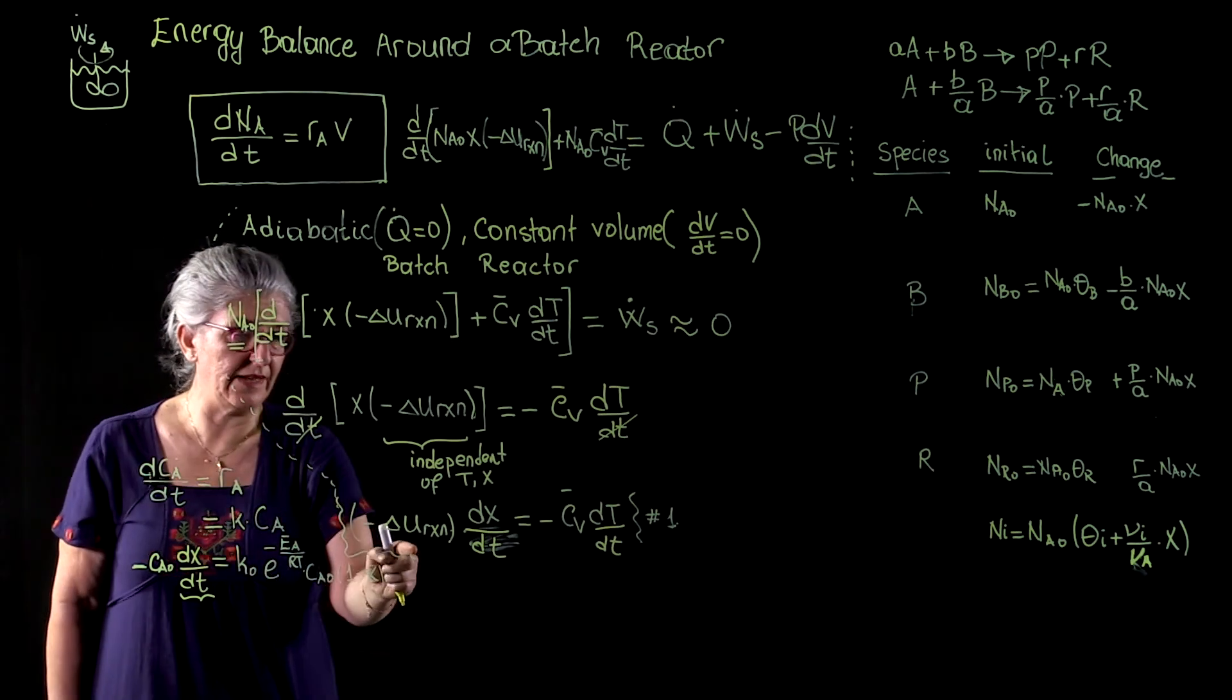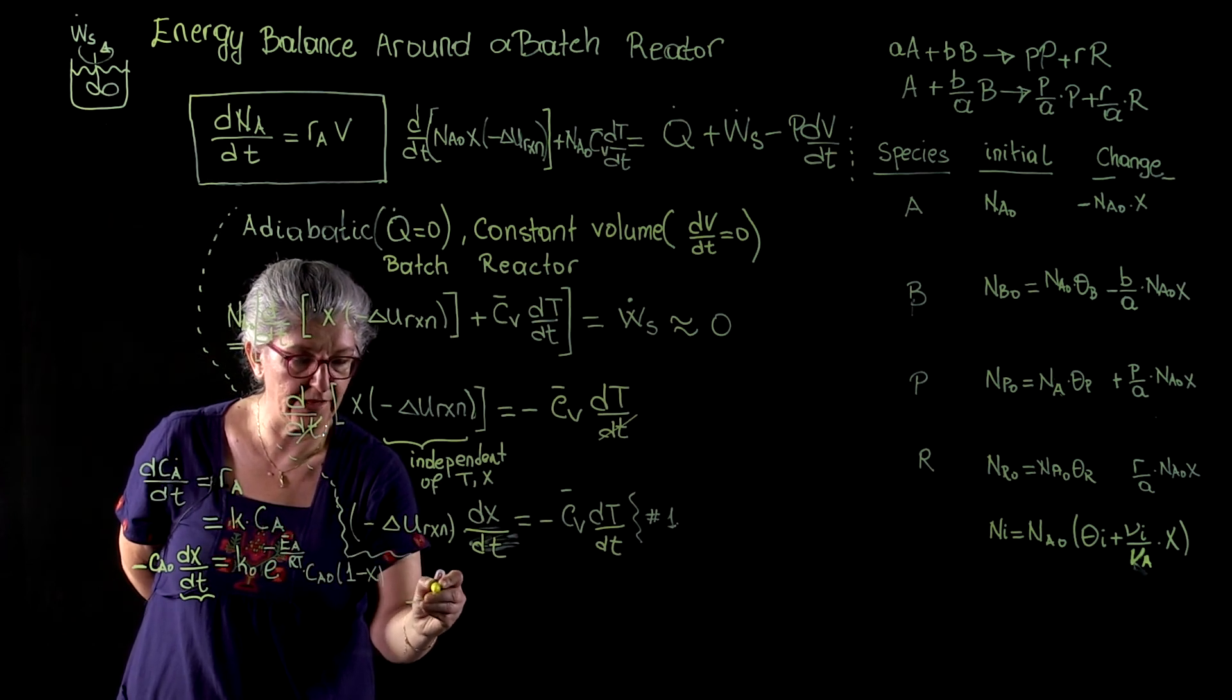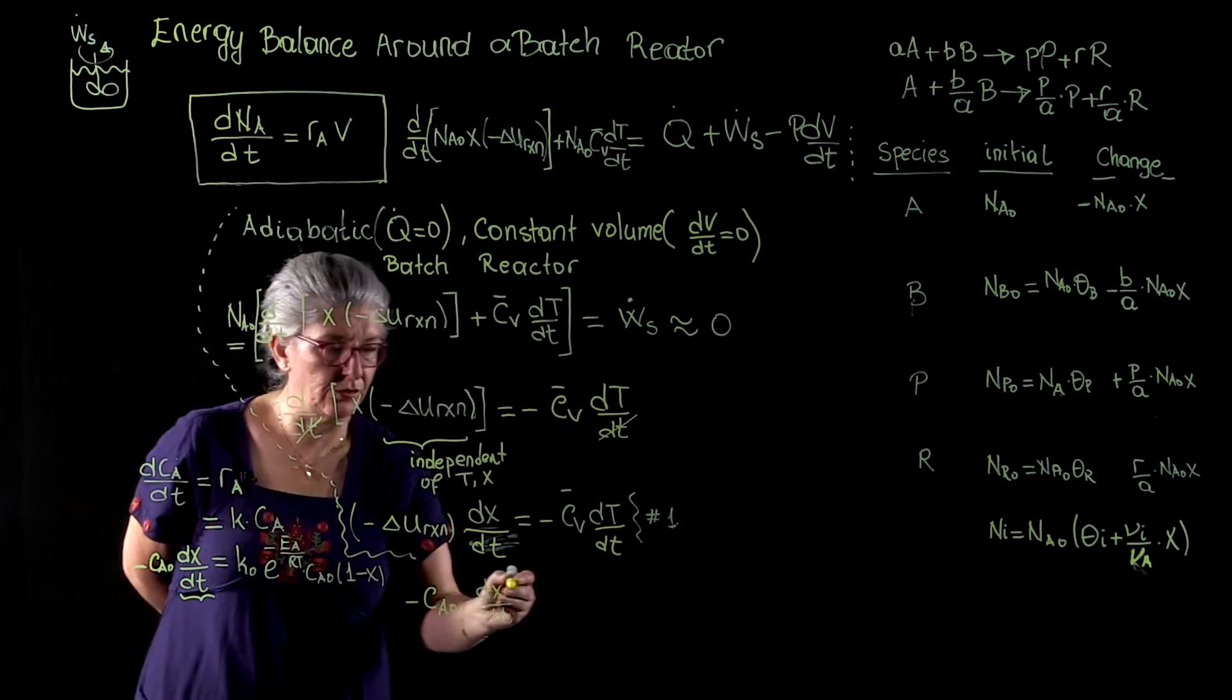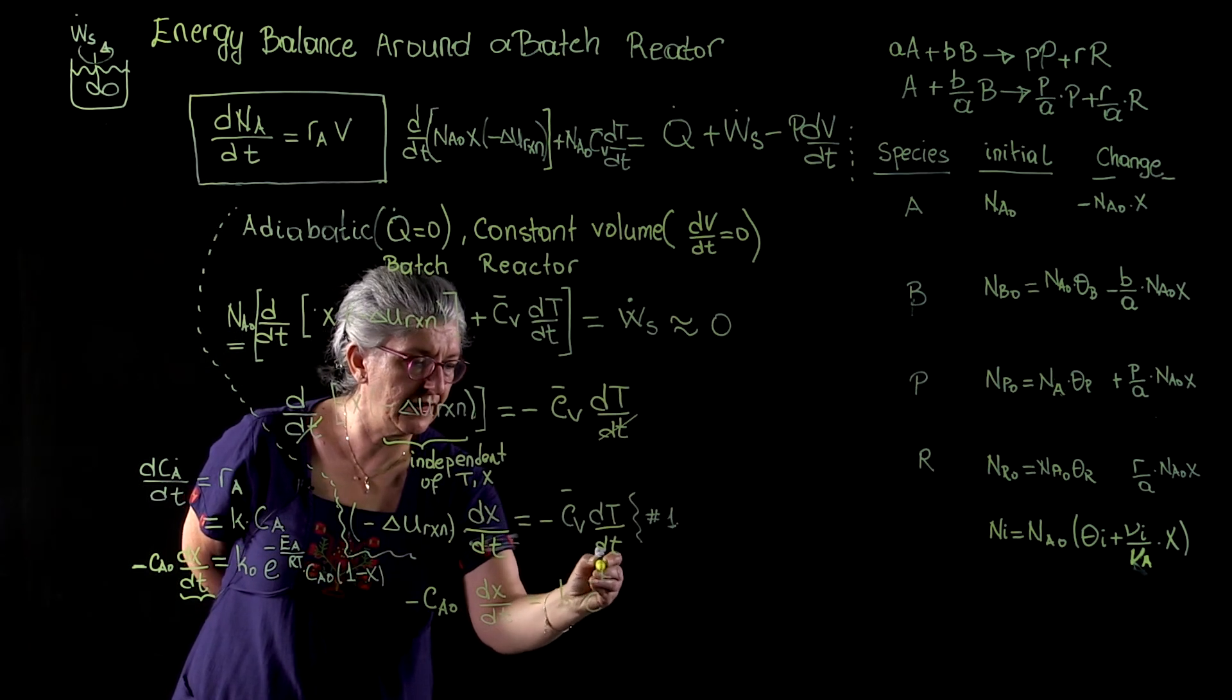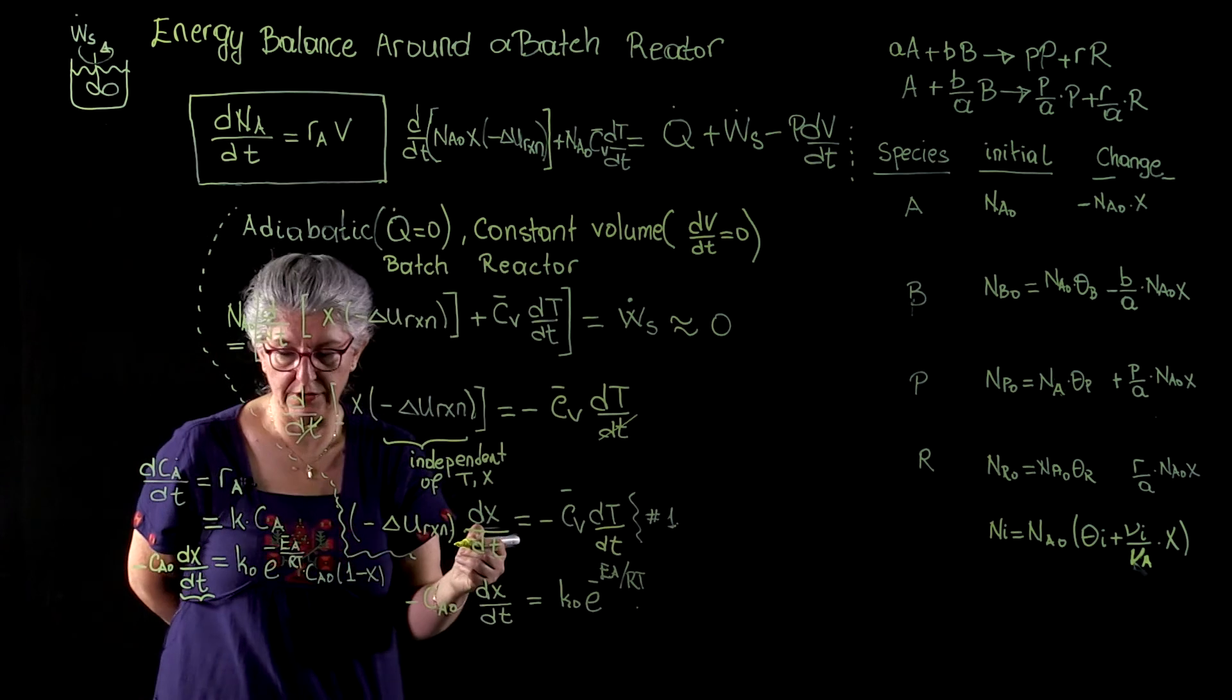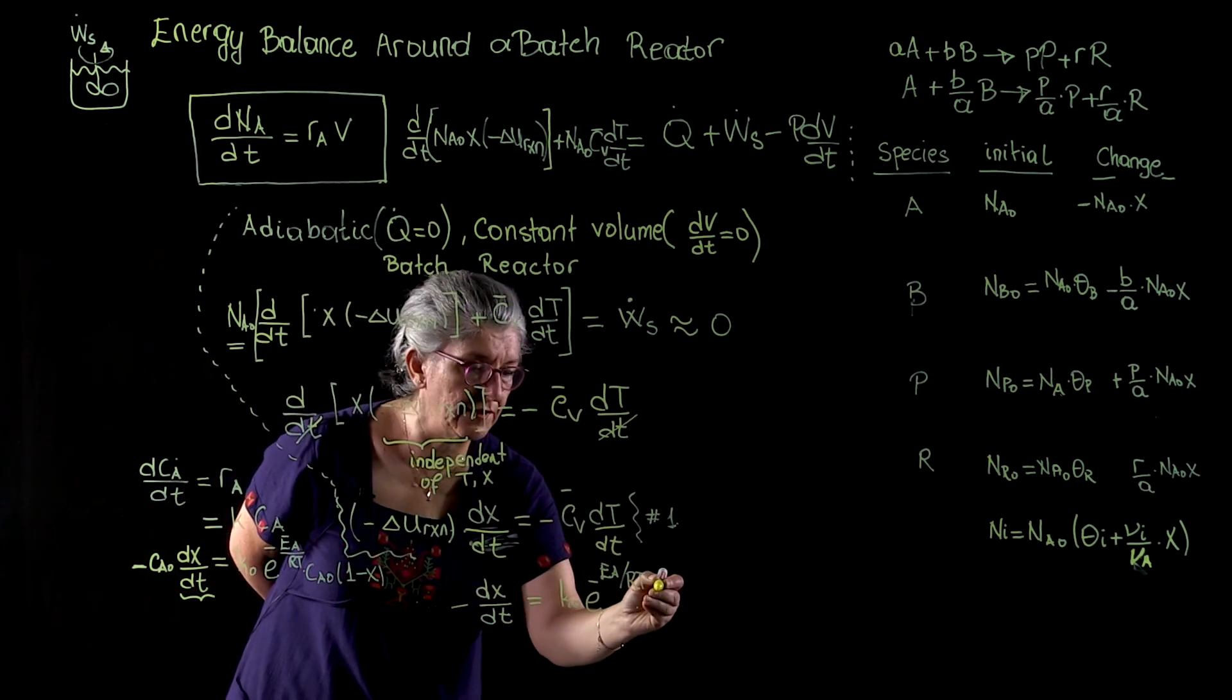this underneath the energy balance so that we can see everything in a clear and concise fashion. Minus cA0 dx over dt is equal to k0 e to the minus eA over RT times cA0. In fact, cA0 is cancel. So I will erase this one. Minus dx over dt times 1 minus x.